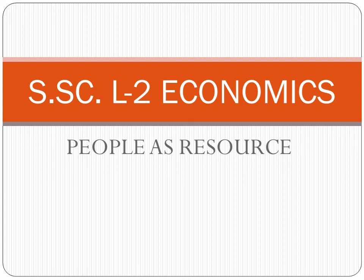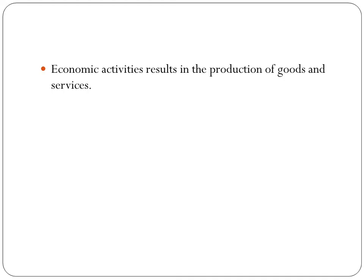We are discussing the second lesson of economics: people as resource. In the previous video, we discussed the economic activities performed by people. There are three types of economic activities performed by people: primary, secondary, and tertiary.